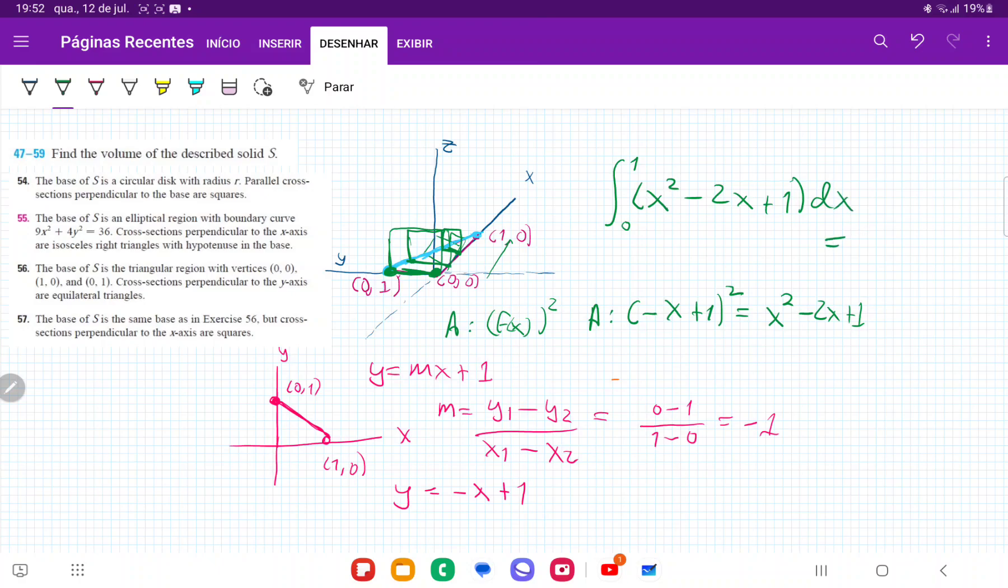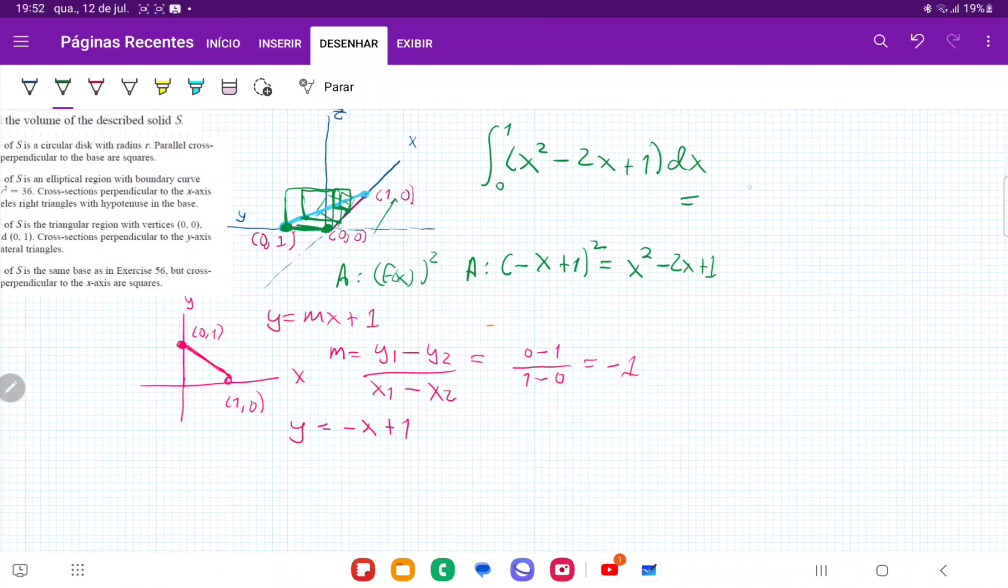When we integrate this, we get x³/3 - x² + x evaluated from 0 to 1. When we plug in our boundaries, we get 1/3 - 1 + 1. If we put in 0, everything goes away. The -1 + 1 cancels out, so in the end we just have 1/3.